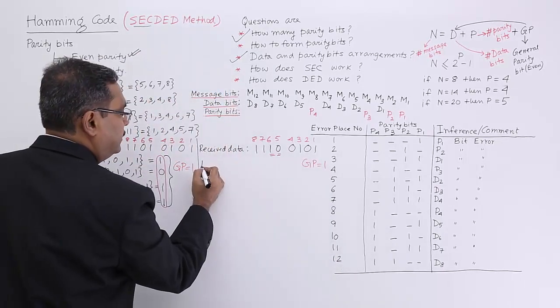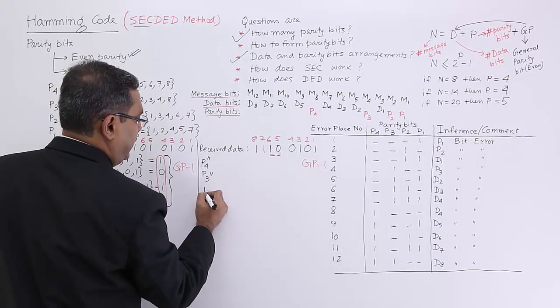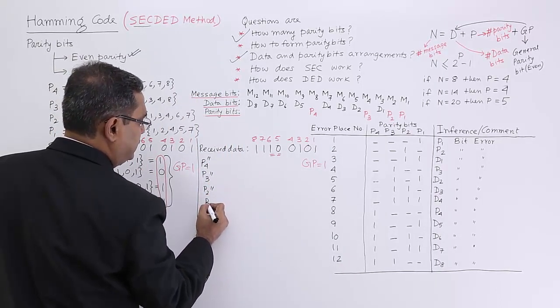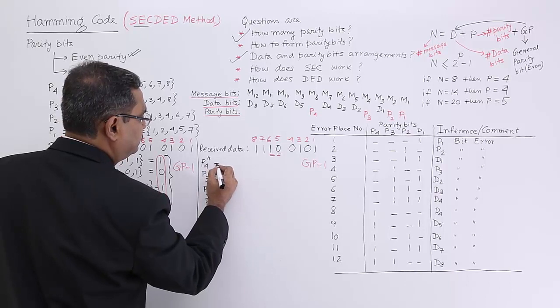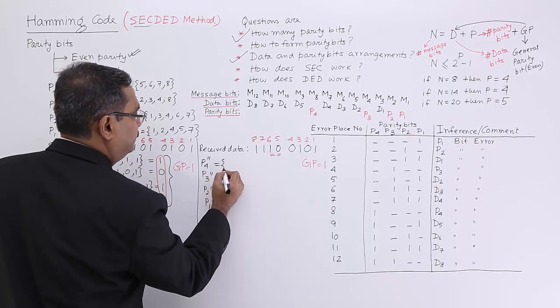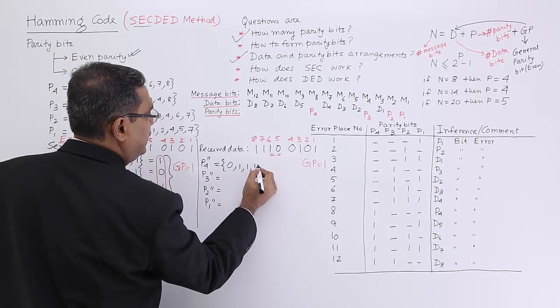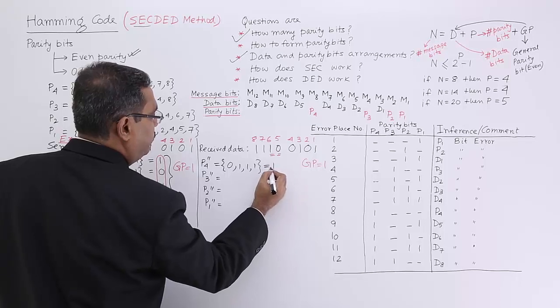Now see, look at the syndrome. I shall go for P4 dash, P3 dash, P2 dash, and P1 dash. Now it is nothing but 5, 6, 7, 8, so the parity bit will be 1.